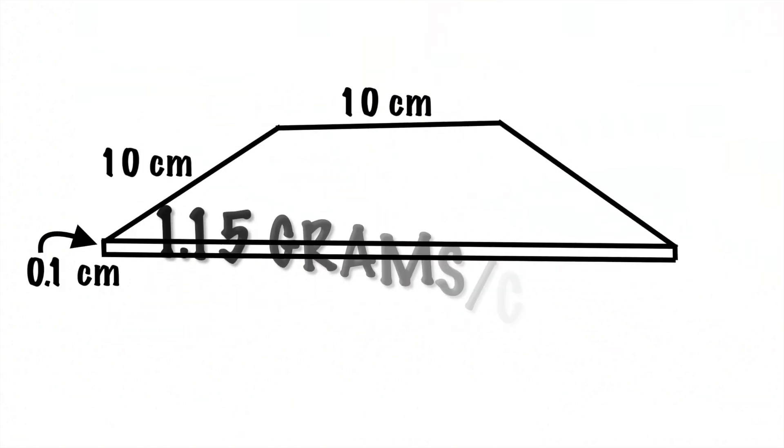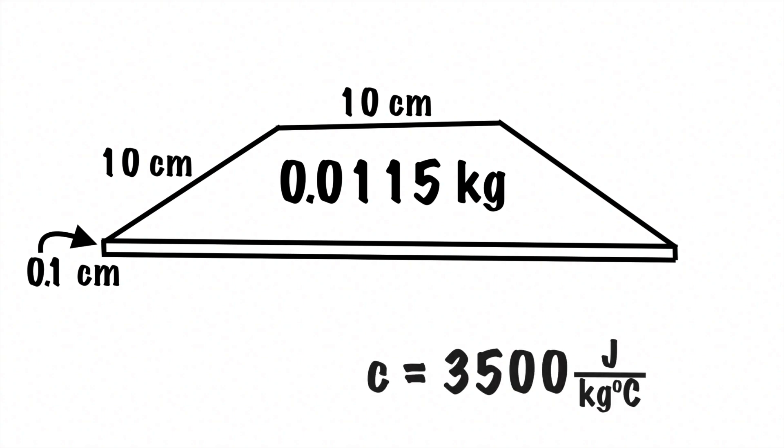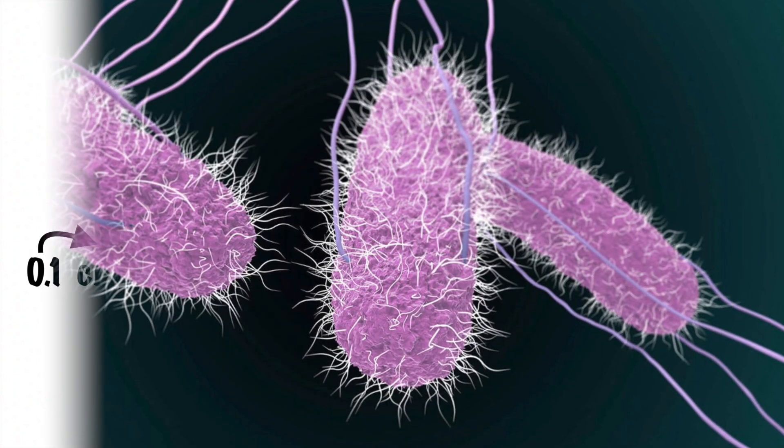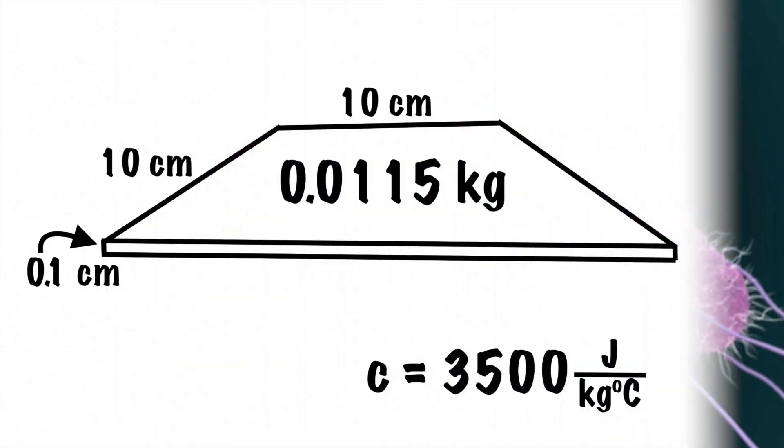If we take the density of your average chicken breast to be 1.15 grams per cubic centimeter, that means that this whole slab of chicken weighs 0.0115 kilograms. Chicken has a specific heat of about 3500 joules per kilogram degrees celsius.